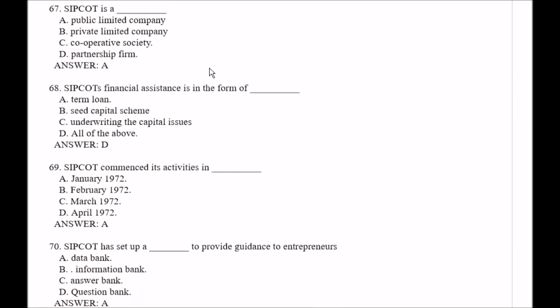Question number 67: SIPCOT is a — Option A, public limited company; Option B, private limited company; Option C, cooperative society; Option D, partnership firm. The right answer is Option A, that is public limited company.